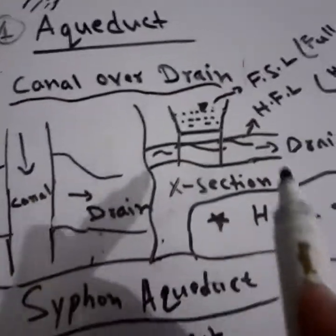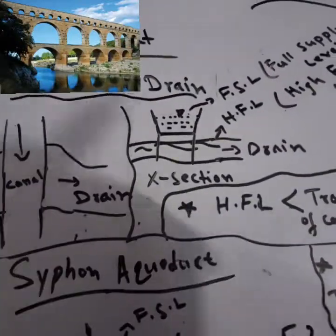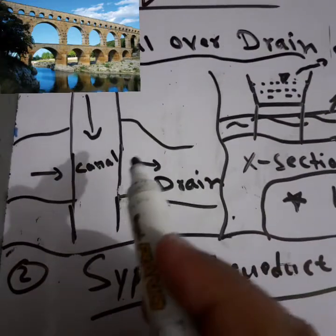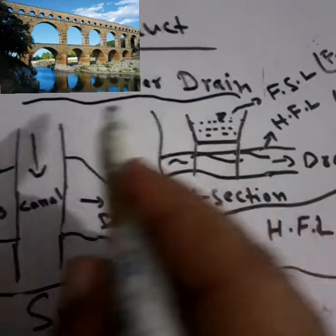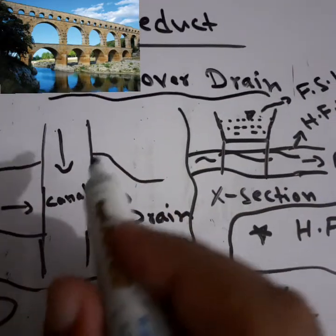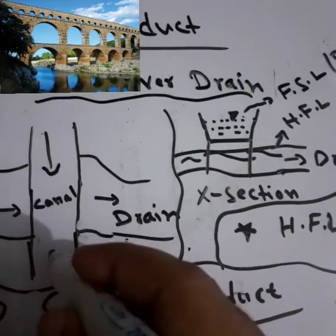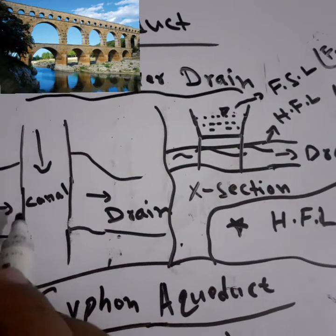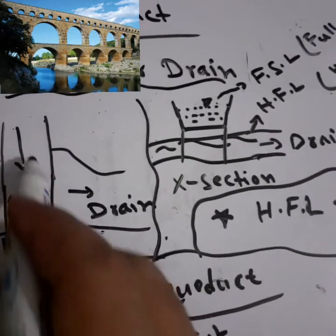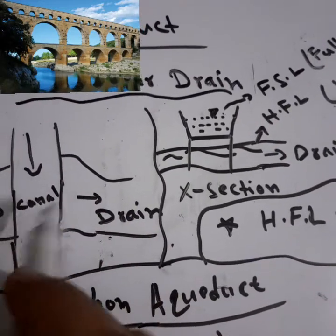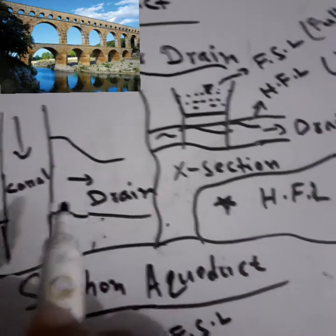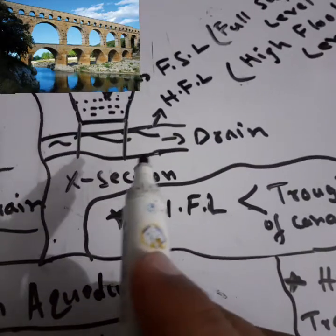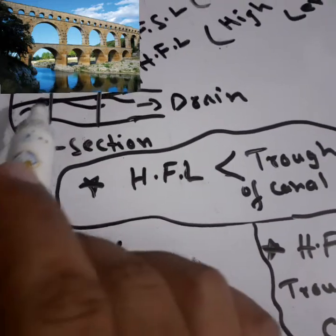The first type is the aqueduct. You may have seen it in pictures, and here you can see the schematic diagram. These are the drains and these are the canals. In this first type, the canal passes over the drain — the drain is below the canal. The drain water is below and the canal water, which is the clear water we carry to the fields, passes above.